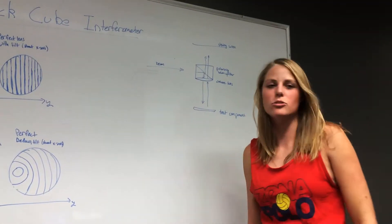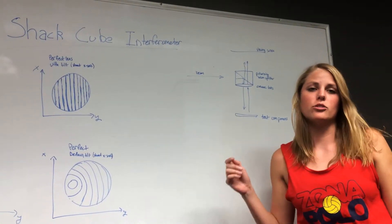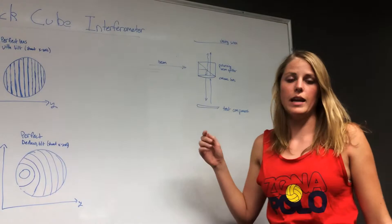In previous labs, we used shear interferometers to measure the wavefront error difference function. However, the Shack cube interferometer measures the direct wavefront error by comparing a reference wave with an aberrated wavefront.